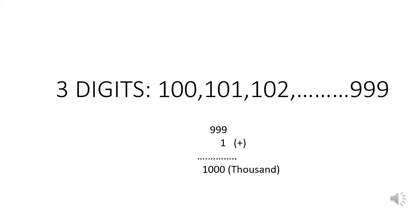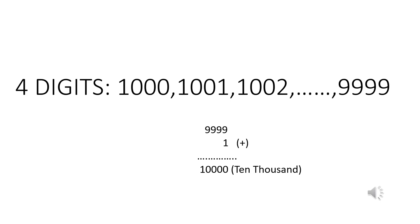1000 is the smallest four-digit number. From 1000 to 9999, these numbers are called four-digit numbers. The smallest four-digit number is 1000 and the greatest four-digit number is 9999.